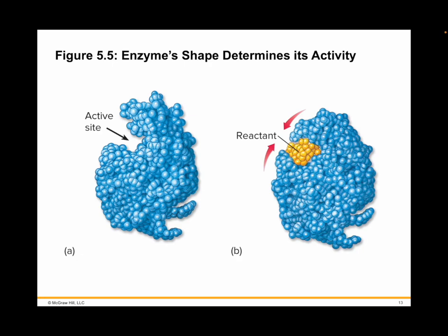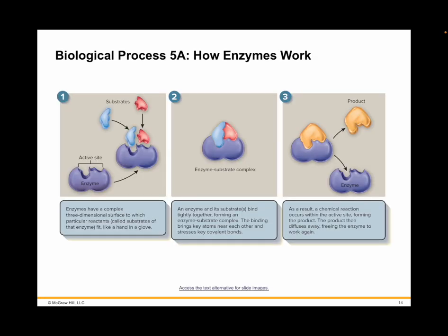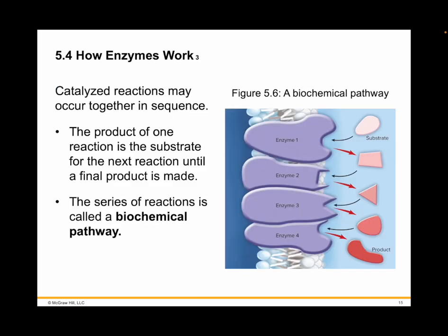In figure 5.6, you can see how the initial substrate is altered by enzyme 1 so that it now fits into the active site of enzyme 2, and so on until the final product is produced. Because these reactions occur in sequence, the enzymes involved are often positioned near each other in the cell — embedded in a membrane near each other — allowing the reactions of the biochemical pathway to proceed faster. Biochemical pathways are the organizational units of metabolism.